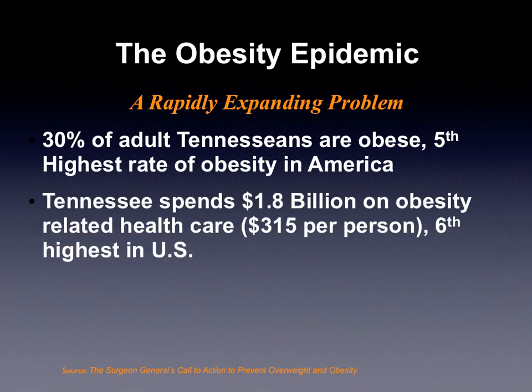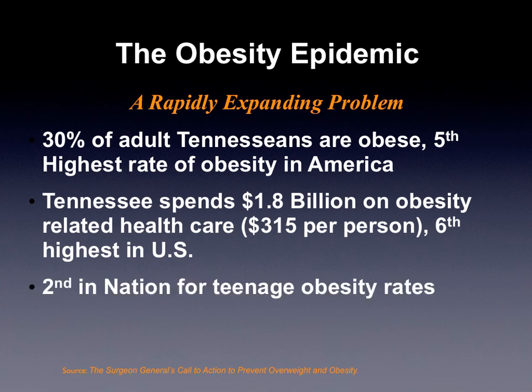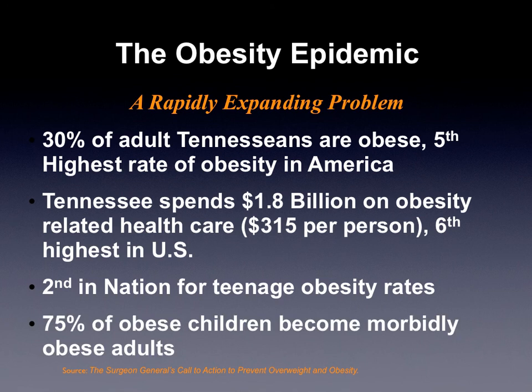We spend a lot of our tax dollars — $1.8 billion — on obesity-related health care. We're about sixth highest in expenditures in the U.S. We're number two for teenage obesity, and that's quite scary because we know three-fourths of our heavy children are going to become heavy adults. They don't outgrow this.